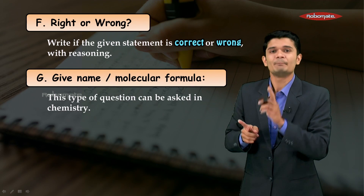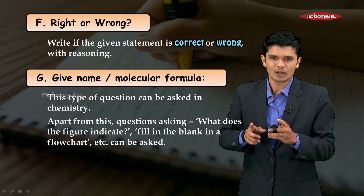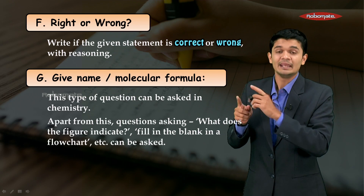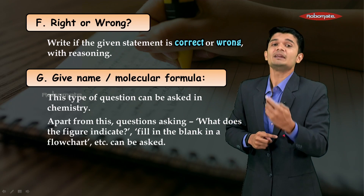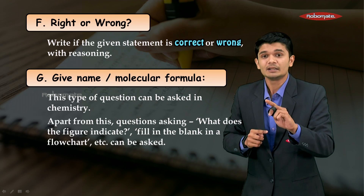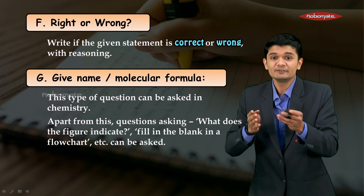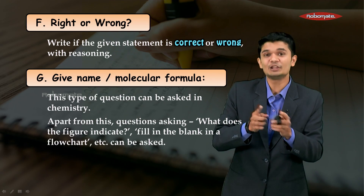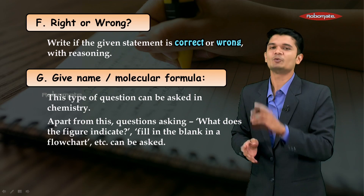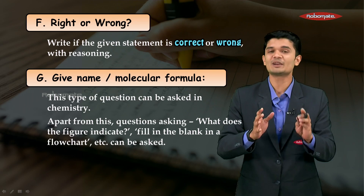Finally, the last section is give the name or the molecular formula. These questions appear mostly in chemistry. Apart from naming, the question might also be asked as what does the figure indicate, or even fill in the blanks in a flowchart. These are all the same type of questions — this was all about Question Number 1A.